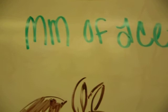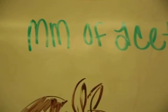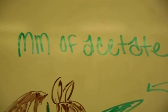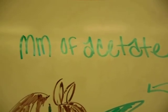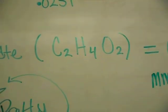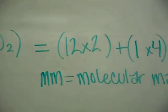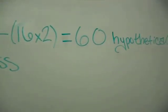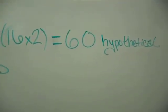We hypothesized that our volatile liquid was acetate. Therefore, we calculated the molecular mass of acetate, C2H4O2, equaling 60, our hypothetical.